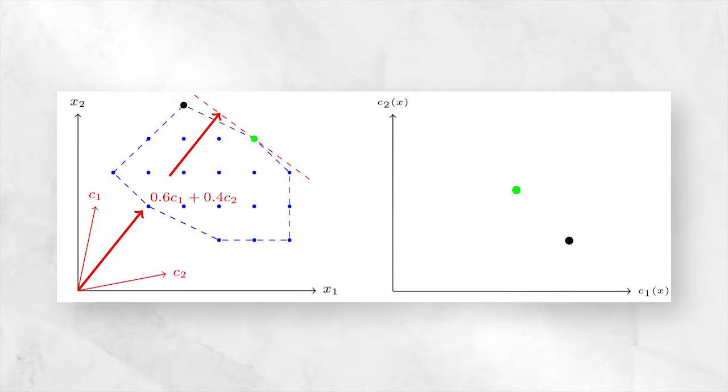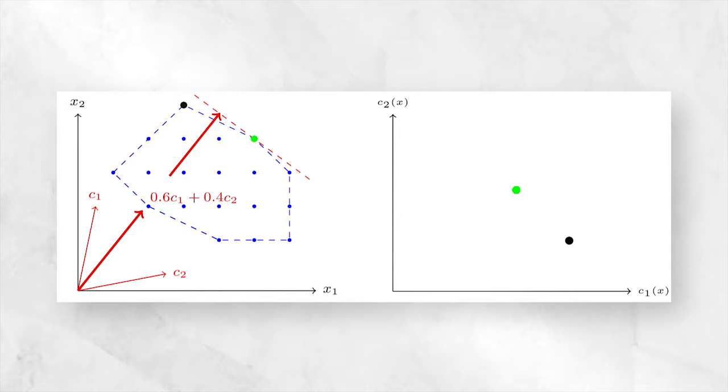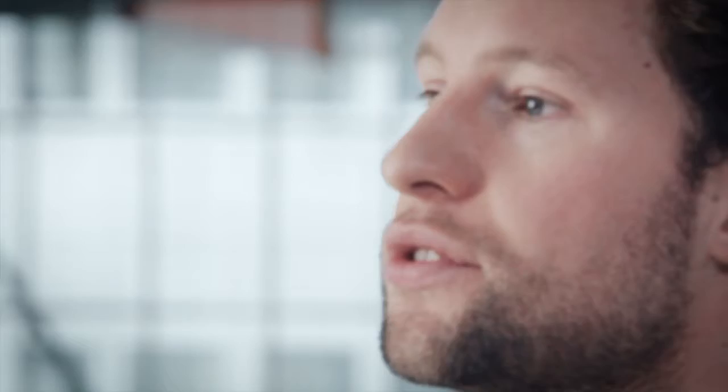However, in general it will not be sufficient, and in this case one needs to come up with more sophisticated methods and algorithms — and exactly these methods and algorithms are part of our research. In our project we have developed a freely available multi-criteria optimization solver named POLYSKIP.